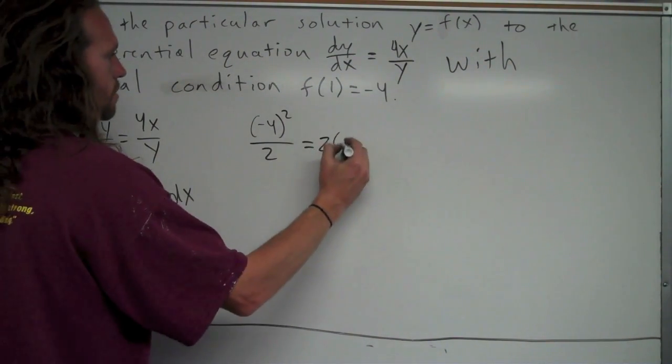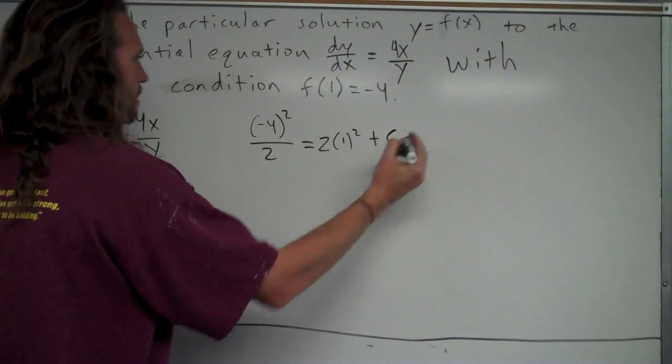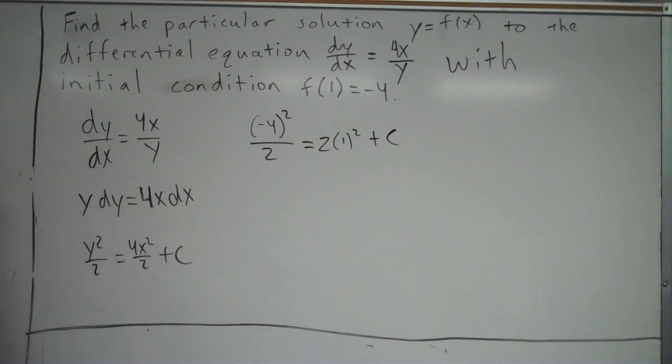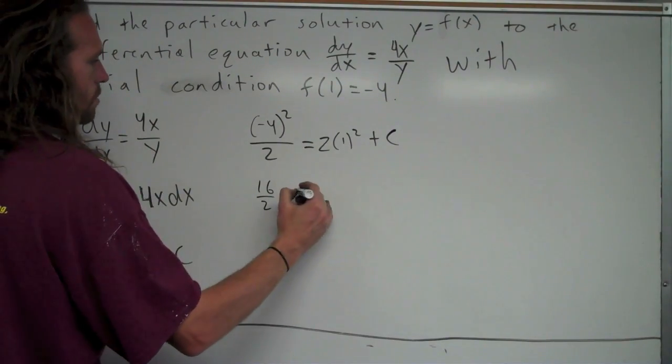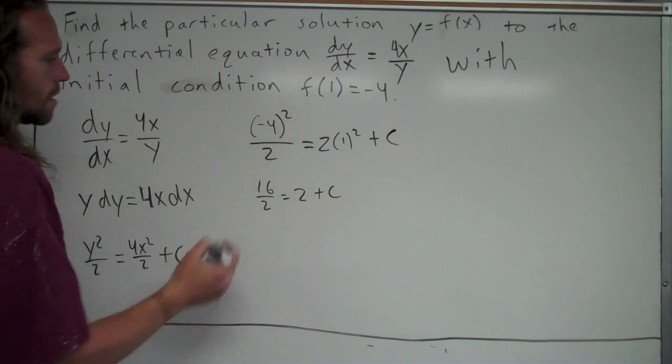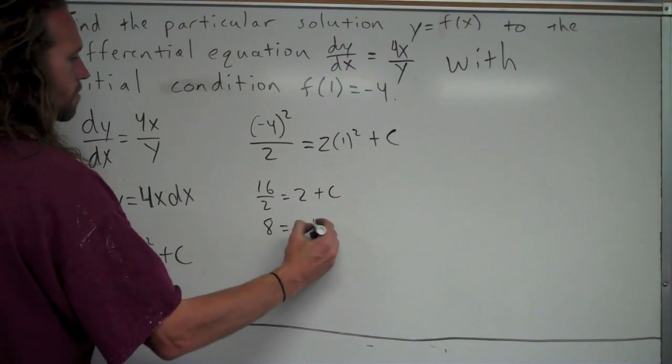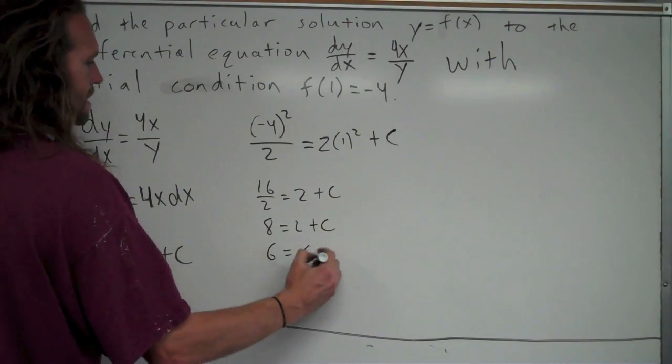2 times, and then x is just 1 squared plus c. So I go ahead and square negative 4. That becomes 16 over 2 is equal to 2 times 1 squared is just 2 plus c. So this is going to be 8 equals 2 plus c. Therefore, c is equal to 6.